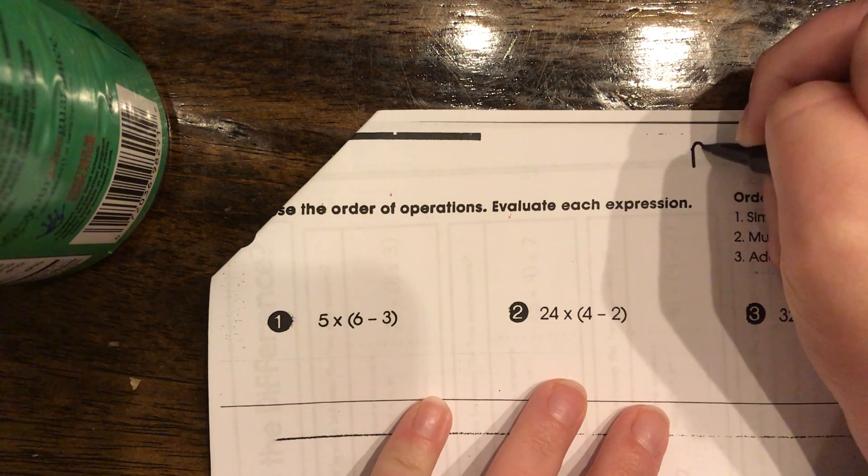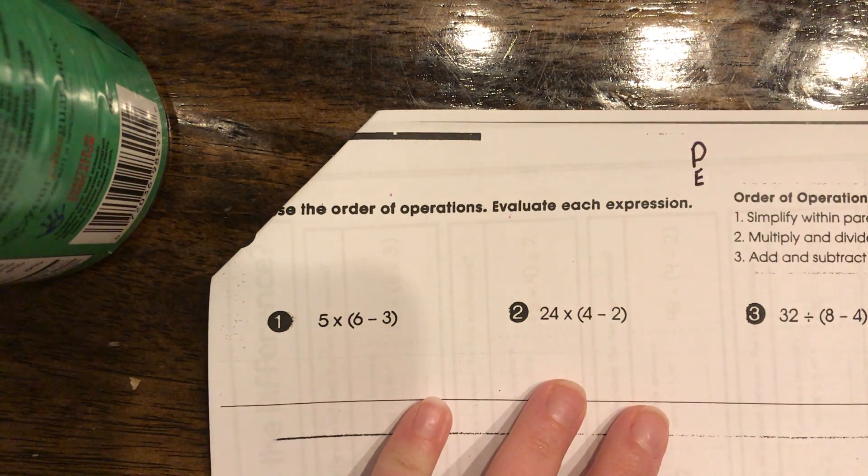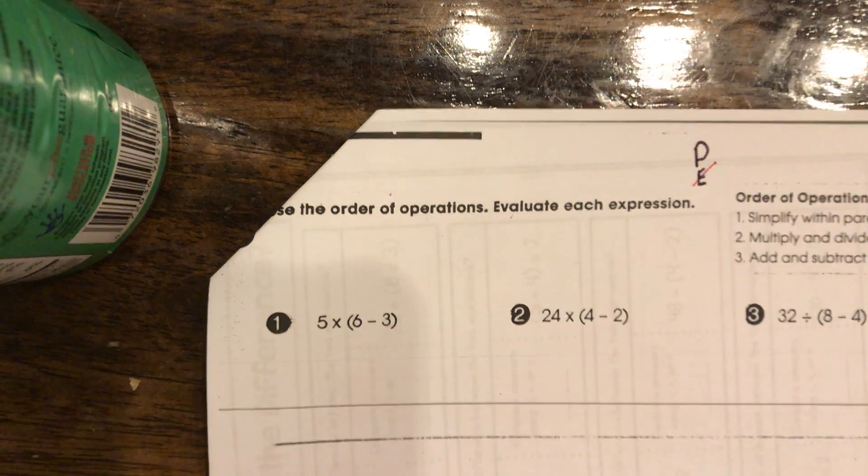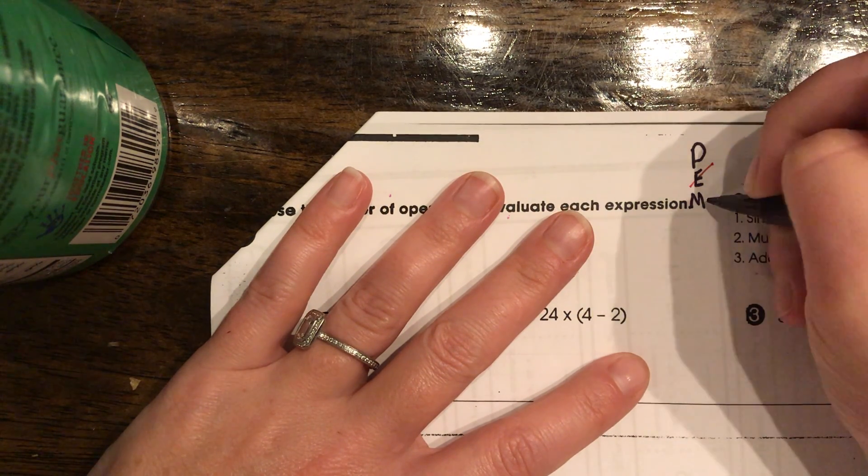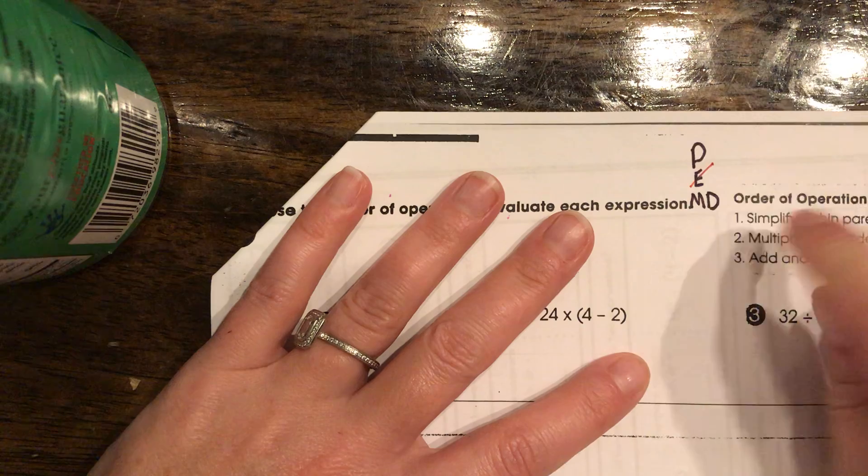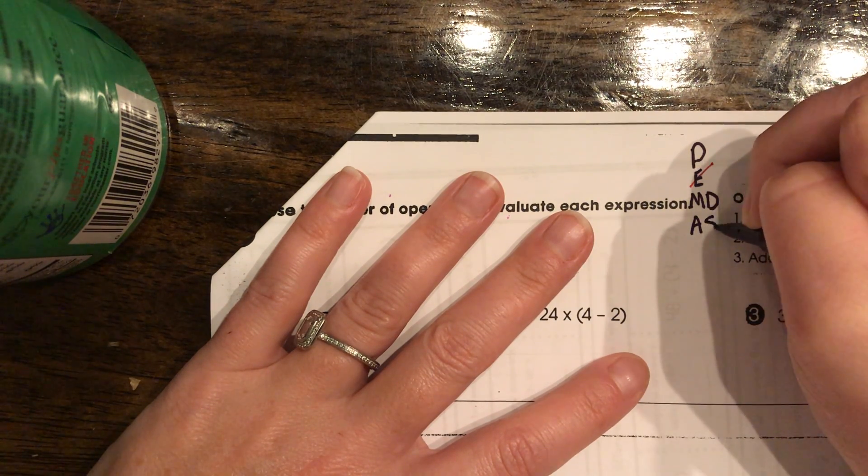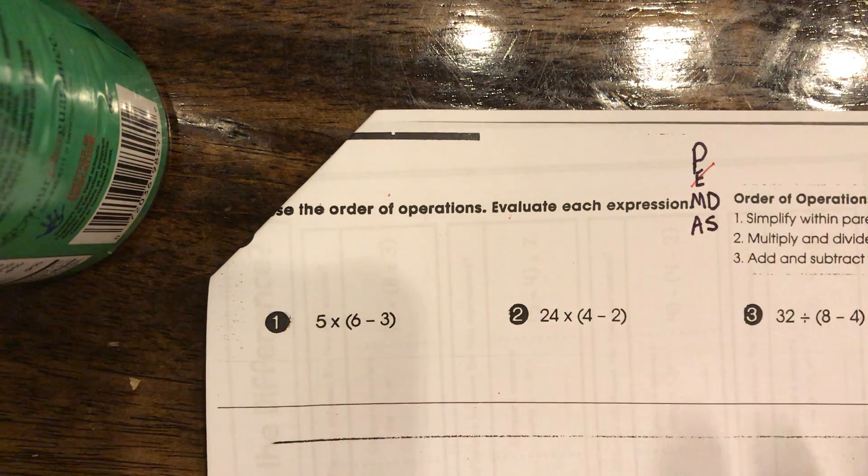Write P and then E, remembering in the fifth grade we don't use exponents, so you can just cross that out, but I want you to know about it because you'll need it for next year. Then write M and D, multiply, divide, next to each other, and A and S next to each other because it's whichever one comes first when you go left to right.